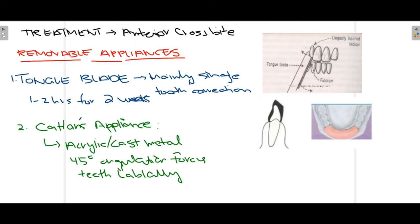Moving towards the main objective of the video — how do we correct crossbite? First we'll talk about treatment options for anterior crossbite. Starting with removable appliances, the first is the tongue blade — a wooden stick-like appliance used mainly to correct the positioning of a single tooth.